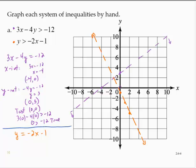It looks like I can use the origin again, so I will test the origin. That would give me 0 is greater than negative 2 times 0 minus 1, which is 0 is greater than negative 1, which is also true. So I would shade the region containing 0, 0, if it were on its own.